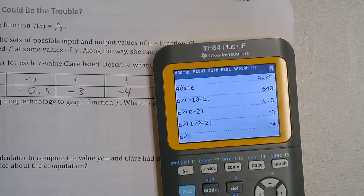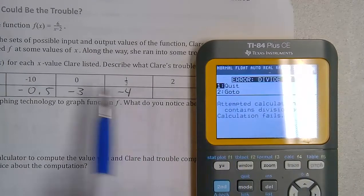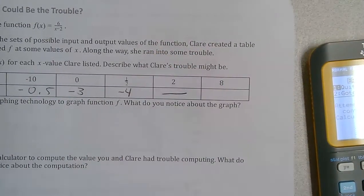And then here, 6 divided by... And if I did 2 minus 2... If you notice, that would be 6 divided by 0. So this is undefined. So I'm going to put a mark there.